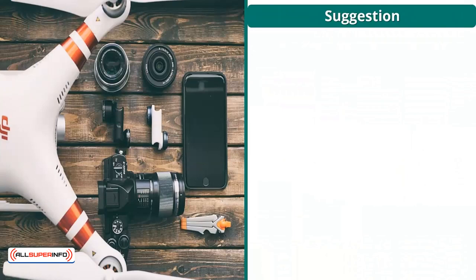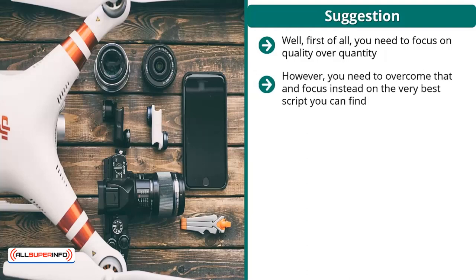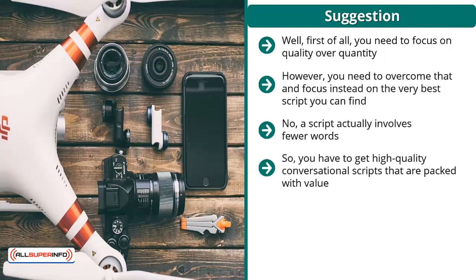Suggestion: how do you improve this type of video marketing? First of all, you need to focus on quality over quantity. I know it's very tempting to gather or outsource a tremendous amount of content, but you need to overcome that and focus on the very best script you can find. This script must be video-centered. A lot of people think that a very informative article automatically means people will respond favorably when those words are scrolling. But a script actually involves fewer words — they're spaced apart, they're in plain English, with so many variables involved. You have to get high-quality conversational scripts that are packed with value.